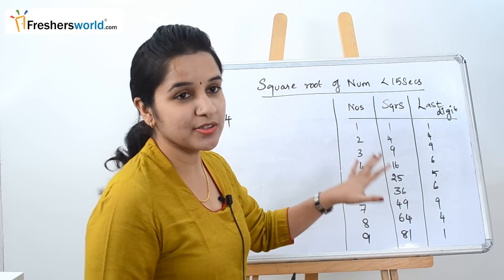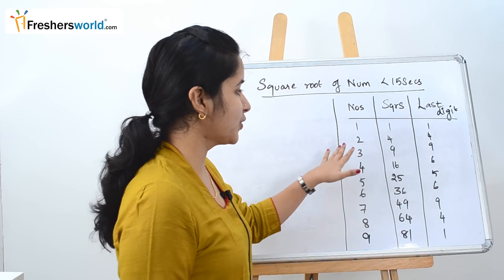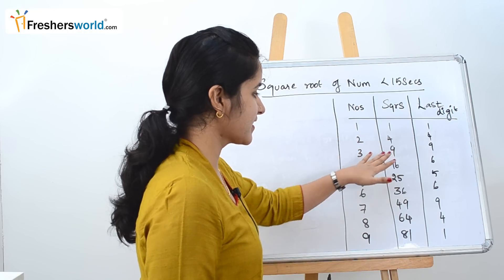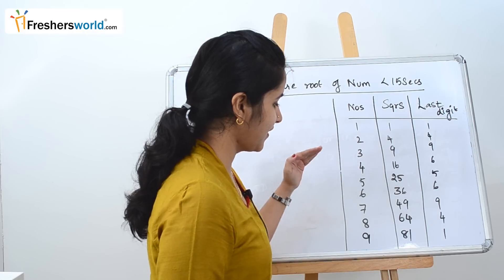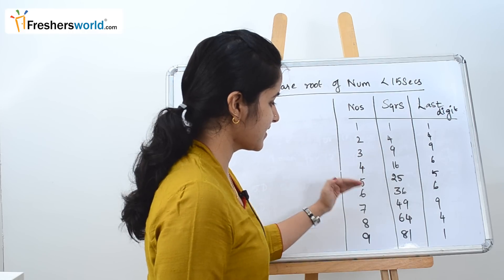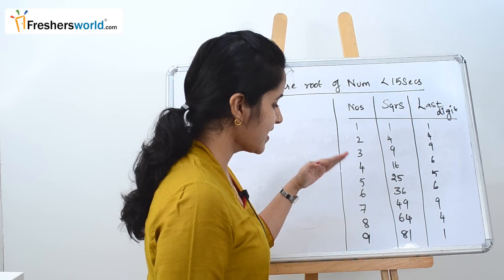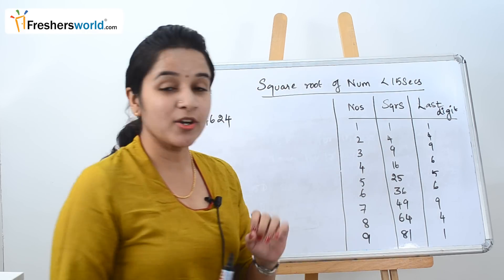The squares are: 1 is 1, 2 is 4, 3 is 9, 4 is 16, 5 is 25, 6 is 36, 7 is 49, 8 is 64, 9 is 81.